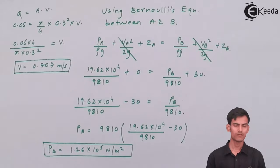After using the Bernoulli's equation once you put down all the values into the equation you get the value of pressure at B as 1.26 into 10 raise to 5 Newton per meter square and if you want to convert it into Newton per centimeter square, multiply it by 10 raise to minus 4.